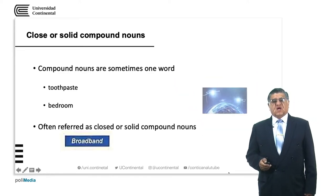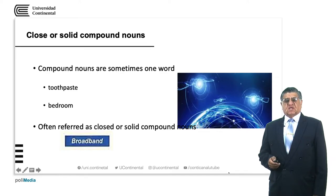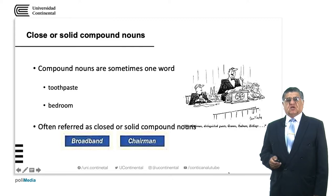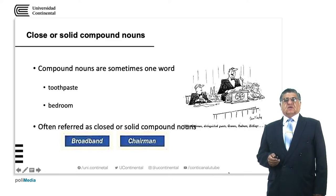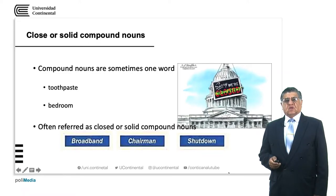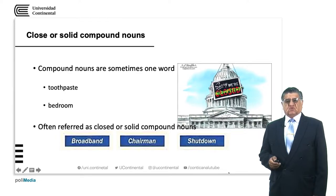Sometimes we have words that refer to something different. For example, 'broadband' — broad means ample, and band is a kind of ribbon. We have 'chairman' — the chairman is the main person that leads or directs a meeting. 'Shutdown' will have many meanings; one of them is to close something or a lack of something. An electricity shutdown — in Spanish we say 'apagón'.